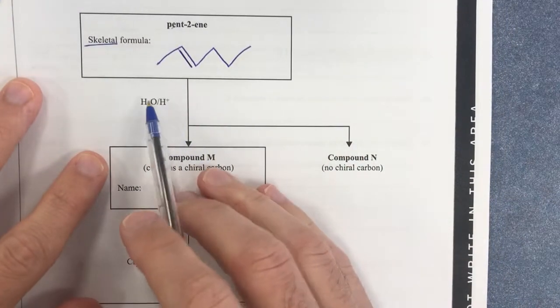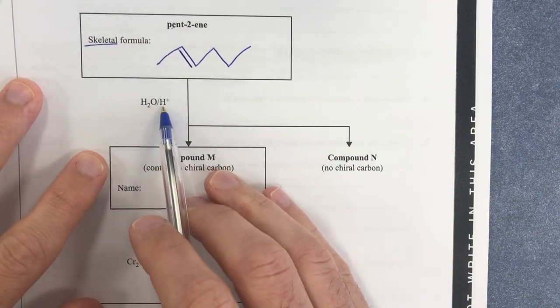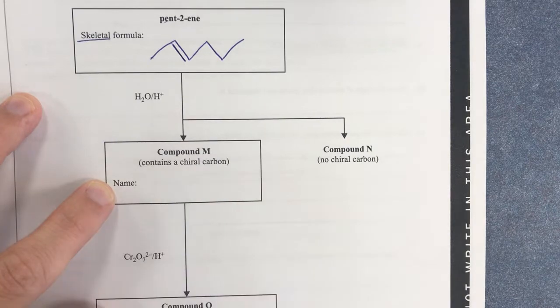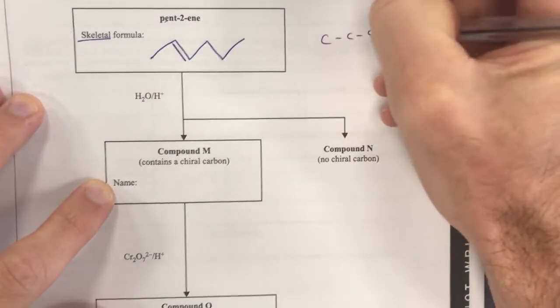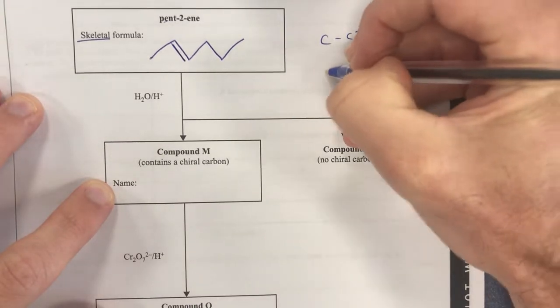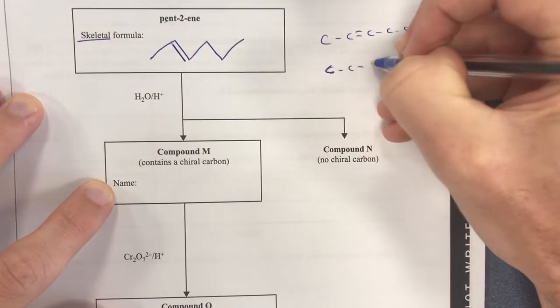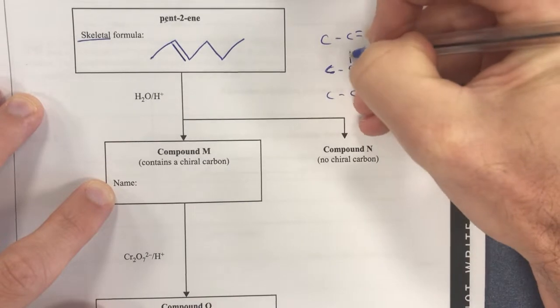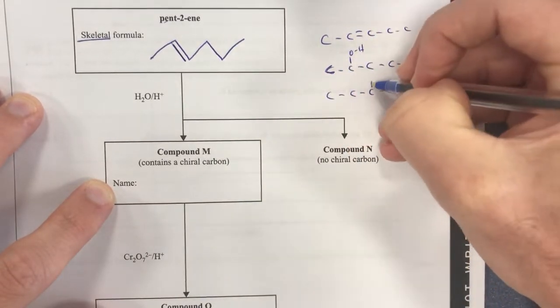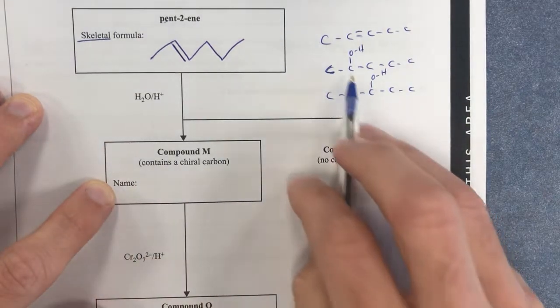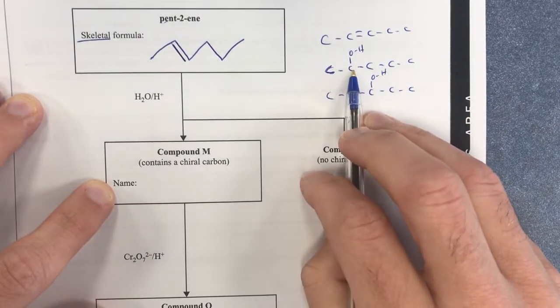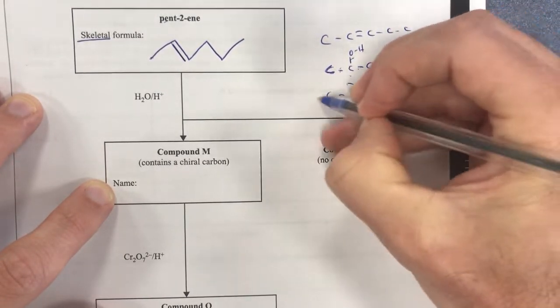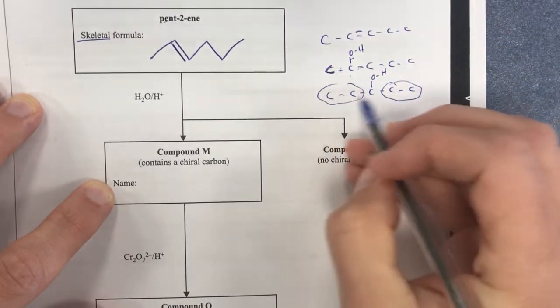What am I doing? I'm reacting that with H2OH+. So therefore, I need to then find this name of compound M, which contains 1 chiral carbon. So what's going to happen is my pent-2-ene, which I'm just going to write out here, it's going to react and it's going to form C-C-C-C-C or C-C-C-C-C. You can see I've got two pathways. One is going to be pent-2-OH. The other one's going to be pent-3-OH. Now, which one will have a chiral carbon? Well, this guy here is going to have a chiral carbon because we're bonded to four different things. Whereas this one, you can see that we've actually got the same thing here.